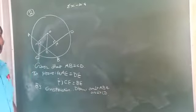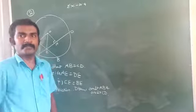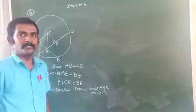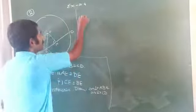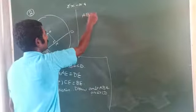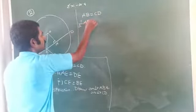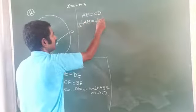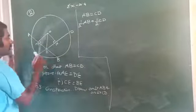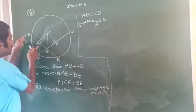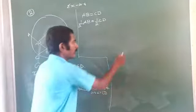We know that if the perpendicular line is drawn from the center of a circle to a chord, then it bisects the chord — bisect means it divides it into two equal halves. Since AB equal to CD is given, we can write half of AB equal to half of CD. So AM equal to BM equal to half of AB.